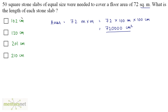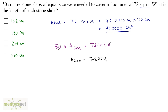50 stone slabs cover the complete area of 720,000 square centimeters. So 50 times the area of one stone slab equals 720,000. Therefore, the area of one slab = 720,000 ÷ 50 = 14,400 square centimeters. The formula for the area of a square is side squared, so side squared = 14,400, which can be written as 144 × 100.